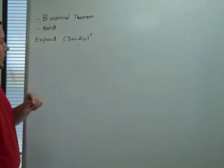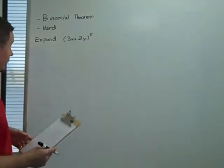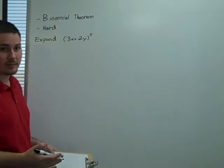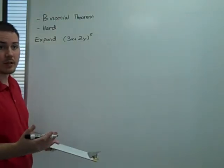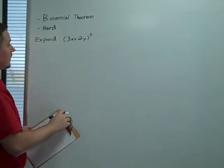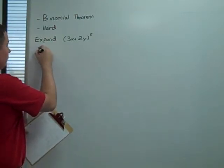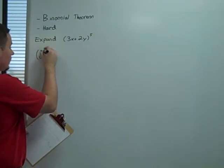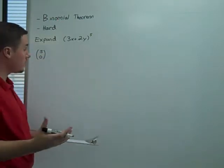This is going to have 6 terms, one more than the exponent 5. Now, I'm going to write some terms that actually represent 1, just so that you can see the pattern in the entire expansion. So this first term is going to be 5 choose 0, because 1 less than the first is 0.